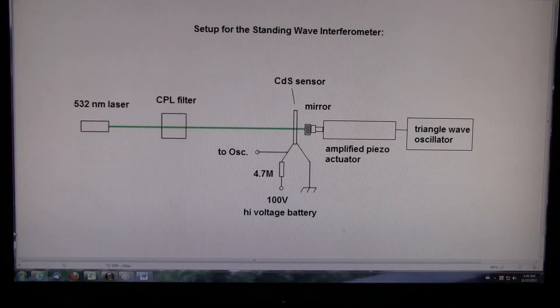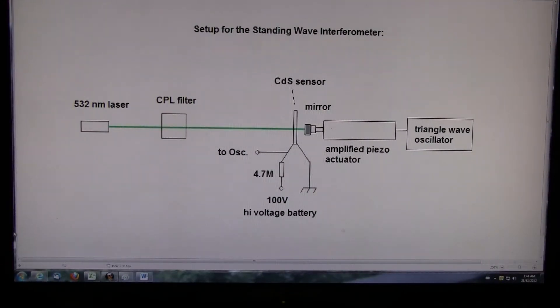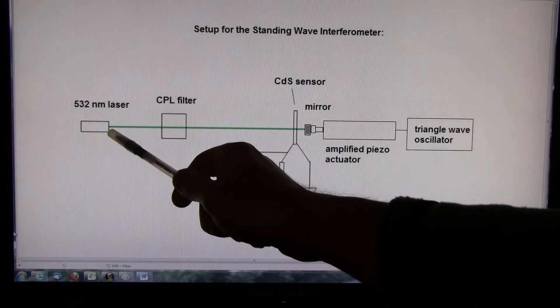Now, as it turns out, the cadmium sulfide sensor has a maximum photosensitivity around the 500 to 550 range, at least in our application. So we decided to go with a 532 nanometer laser because this kind of suited the photosensitivity spectrum that we were dealing with. I've just got the laser shown here.